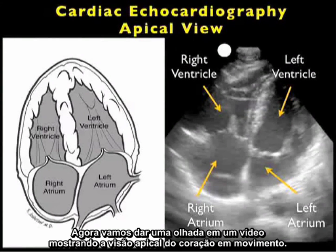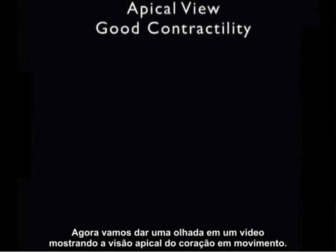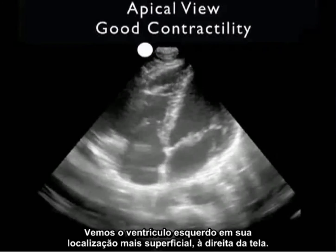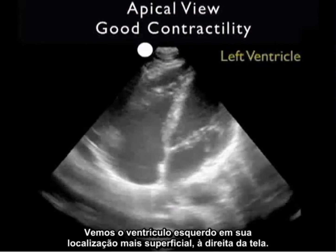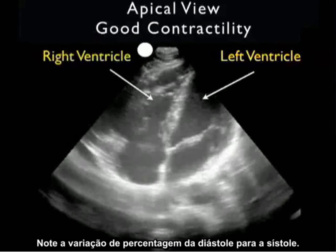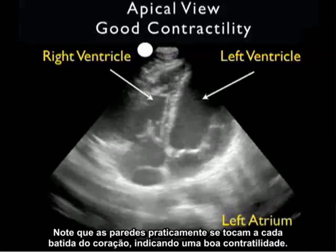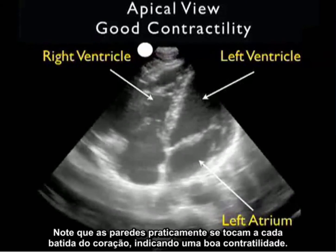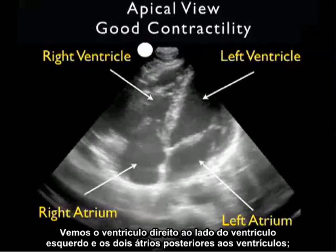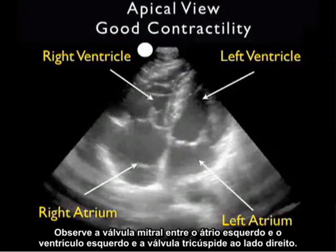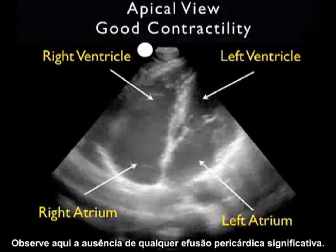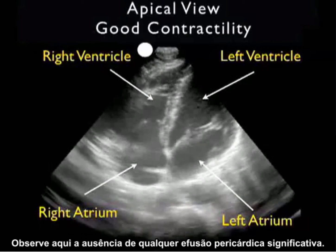Now let's take a look at a video clip showing the apical view of the heart in action. This is taken from a medical student triathlete. We see the left ventricle in its more superficial location to the right of the screen. Notice the percentage change from diastole to systole — the walls almost touch with each heartbeat, indicating good contractility. We see the right ventricle to the side of the left ventricle, and the two atria posterior to the ventricles. Notice the mitral valve between the left atrium and left ventricle, and the tricuspid valve to the right side. Notice the absence of any significant pericardial effusion.